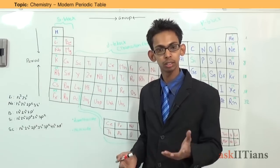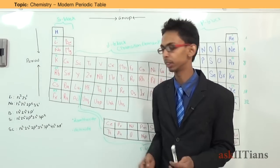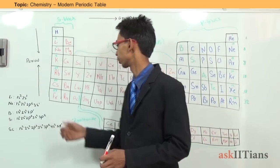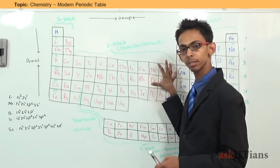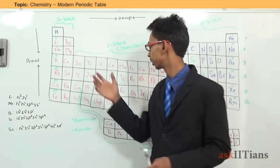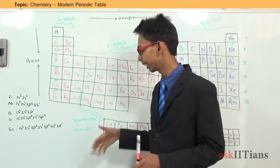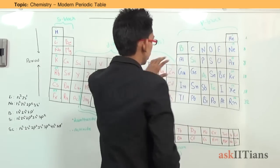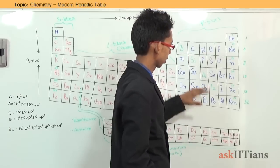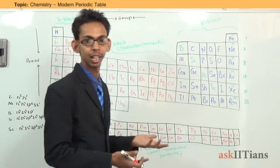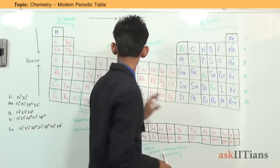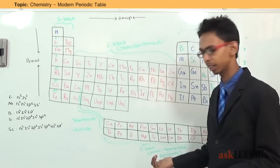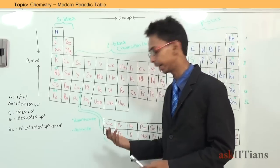The S block elements are all metals with large atomic size, they are soft, and they conduct electricity with good thermal conductivity. The D block elements are known as transition elements — they are reactive metals that form complex compounds. The P block elements are non-metals and may be present as solid, liquid, or gas. Most S block and D block elements are found in solid state. The F block elements are also metals and they are radioactive.